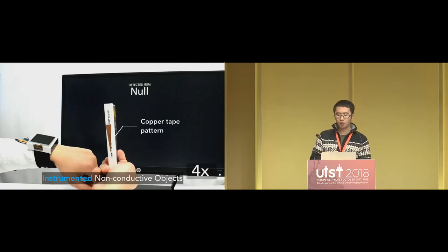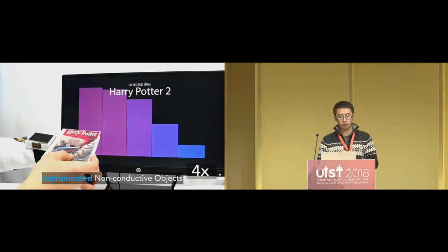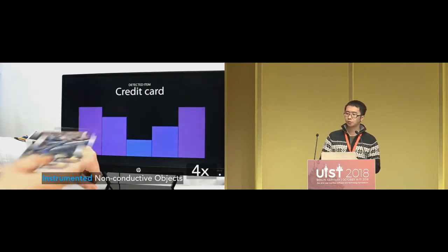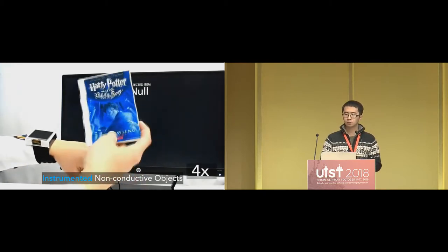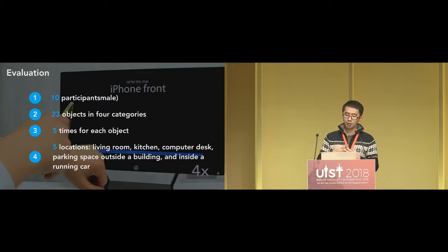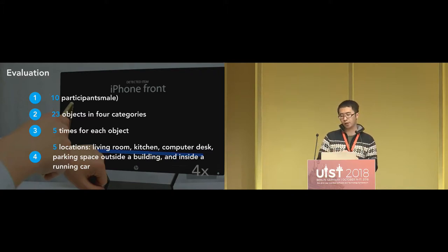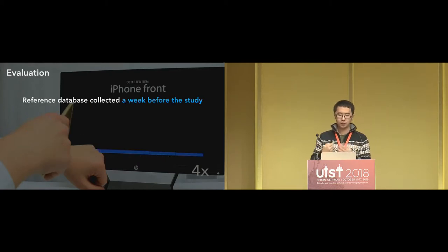To enable non-conductive object sensing, we instrument them using copper tape with different design patterns so they can be distinguished by the sensor. The system can successfully identify different books with different copper tape patterns. To validate system accuracy and robustness, we ran a 10-participant user study. Each participant was asked to tap 23 objects against the sensor for five times. Objects were placed at five locations randomly: living room, kitchen, computer desk, parking space outside the building, and inside a running car, to test if the system is robust across different environmental settings. We used a reference database collected by one volunteer one week before the study.